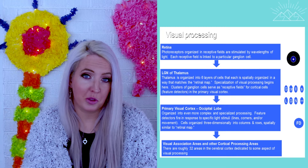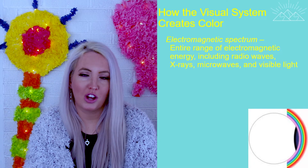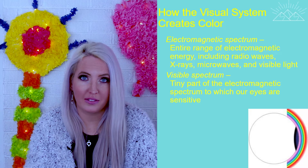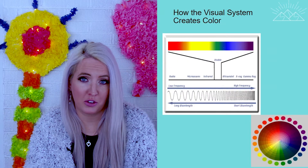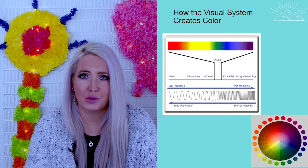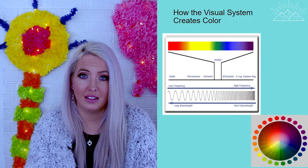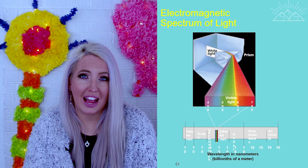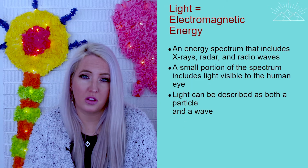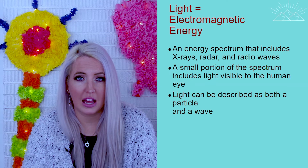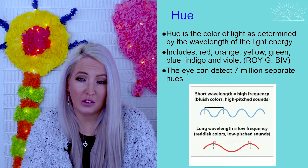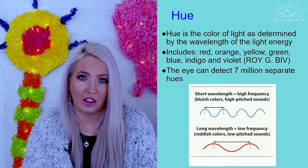This gives us part of the picture of how we see things, but what about color? How does the visual system create color? Colors are waves — they are part of the electromagnetic spectrum, which is the entire range of electromagnetic energy including radio waves, x-rays, microwaves, and what we can see: visible light. The visible spectrum is actually just a really tiny part of the electromagnetic spectrum that our eyes can actually see, and it includes all of the waves that make up all of the colors we are able to see as humans. Another word for color is hue, and the hue of each color is determined by the length of the wave.